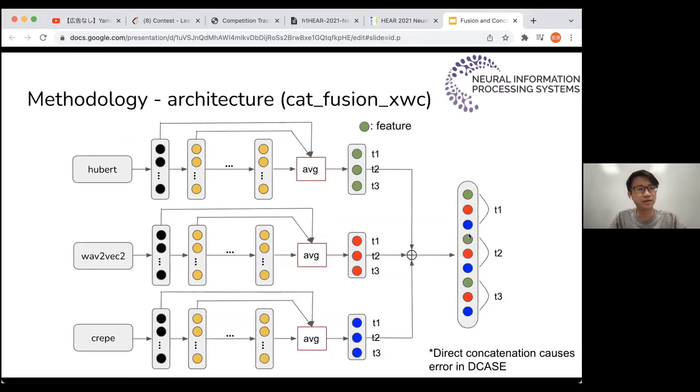This turns out to be our final model architecture and its submission name is cat_fusion_xwc. The first operation is the averaging of each step of the model output. These blocks correspond to each transformer block. We fuse each level of features of each model: Hubert, Wave2Vec2, and the third model is CREPE. But we find that direct concatenation will have errors in the CER task, probably due to destructed timestamp. If you just directly concatenate three features, you will destruct the time sequence information in the output feature.